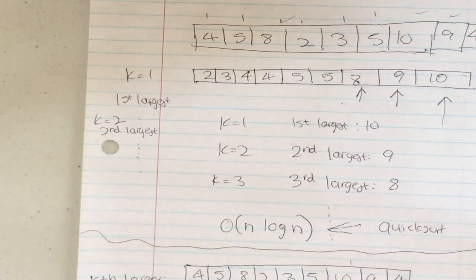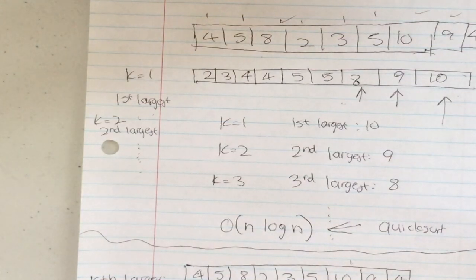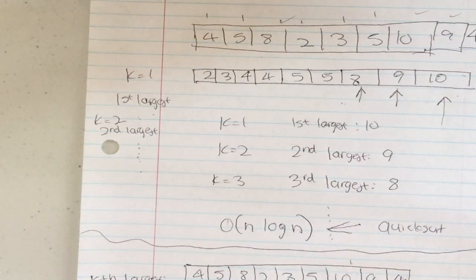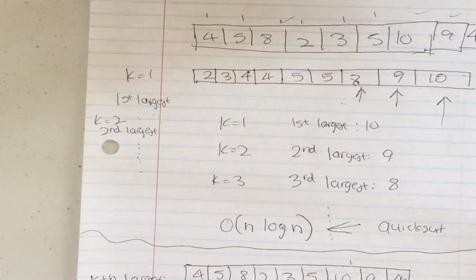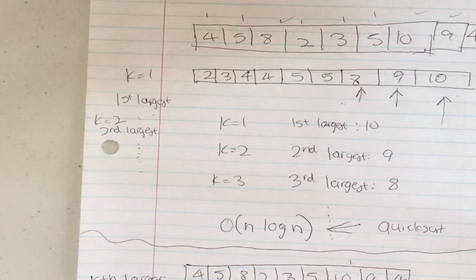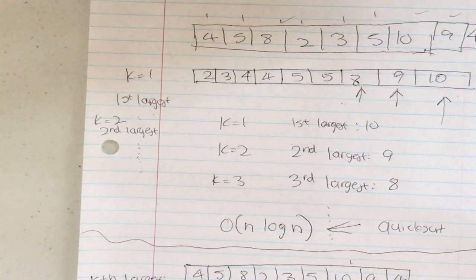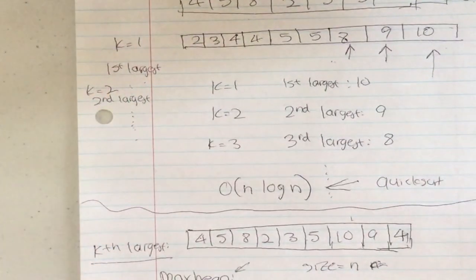So the approach is: maintain a min heap of size k. While iterating through the array, if a value is larger than the top of the heap, remove the top and add the new value. The answer is always the top of the heap at the end.